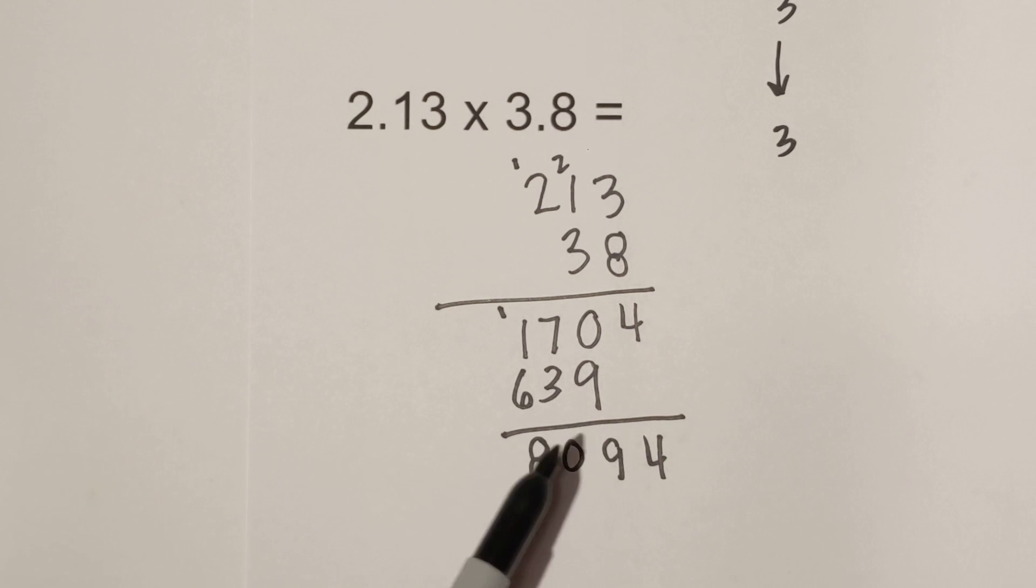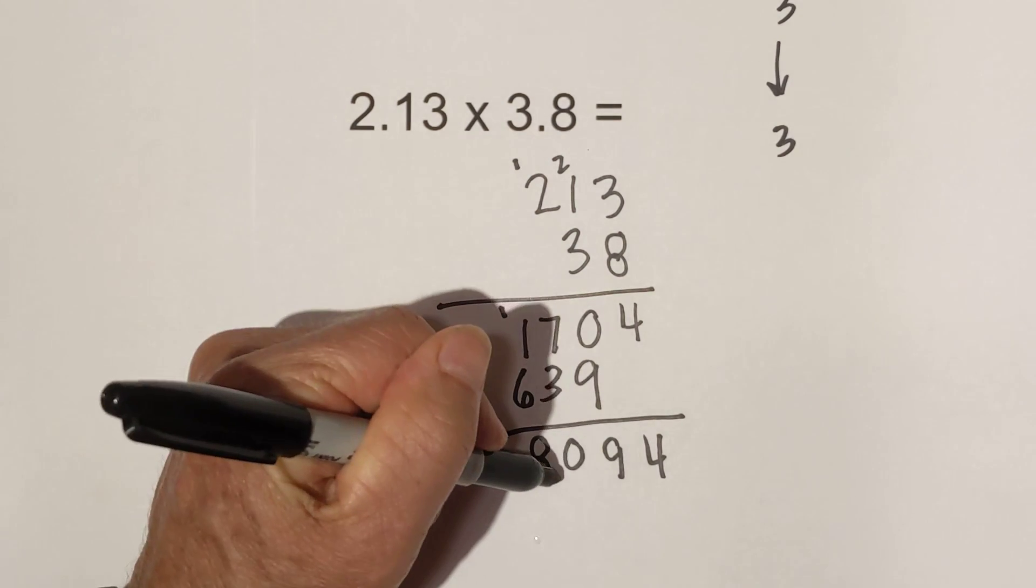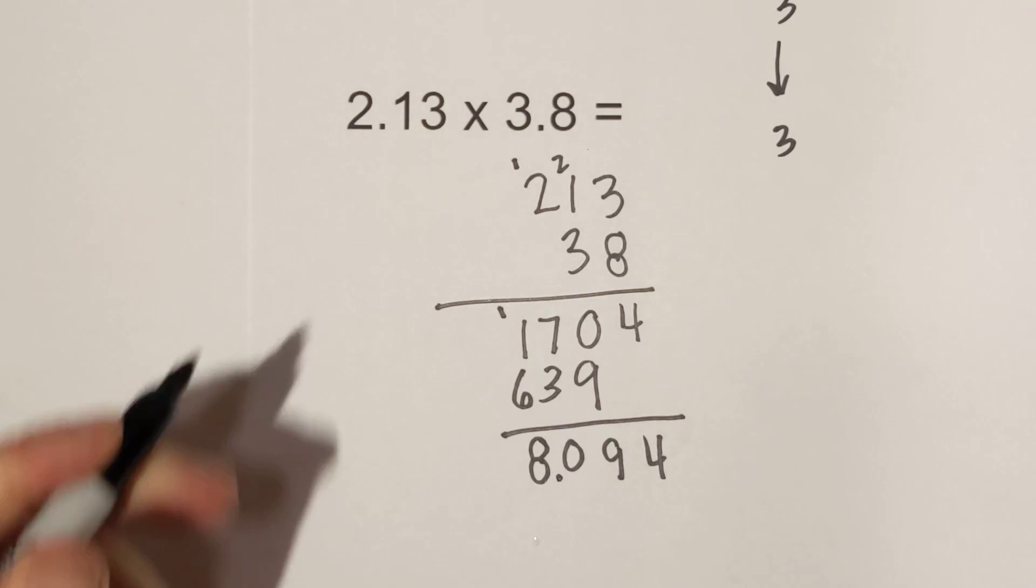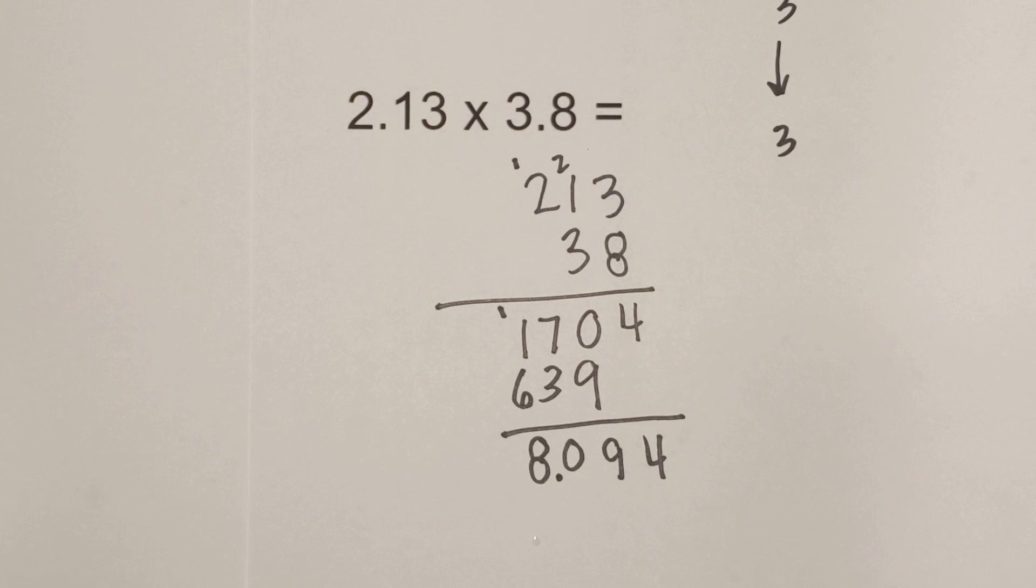And we need 3 numbers to the right of the decimal so we're going to count from the far right: 1, 2, 3. And so here again, it goes right there. So it would be 8 and 94 thousandths.